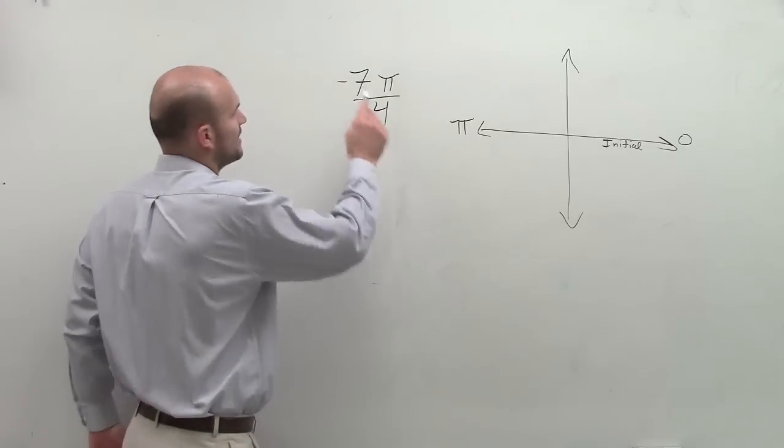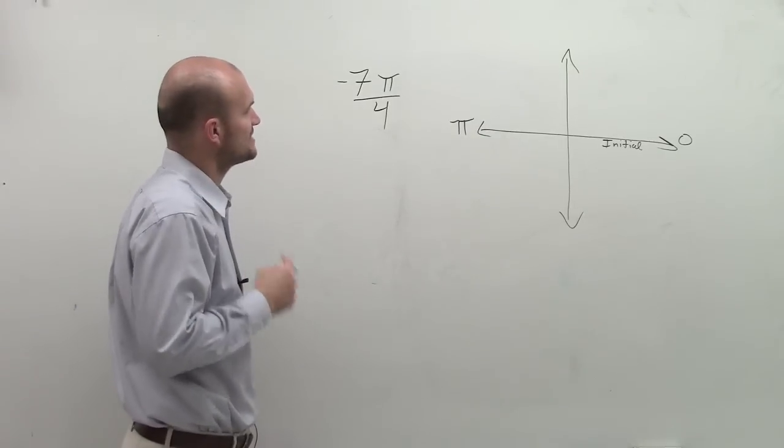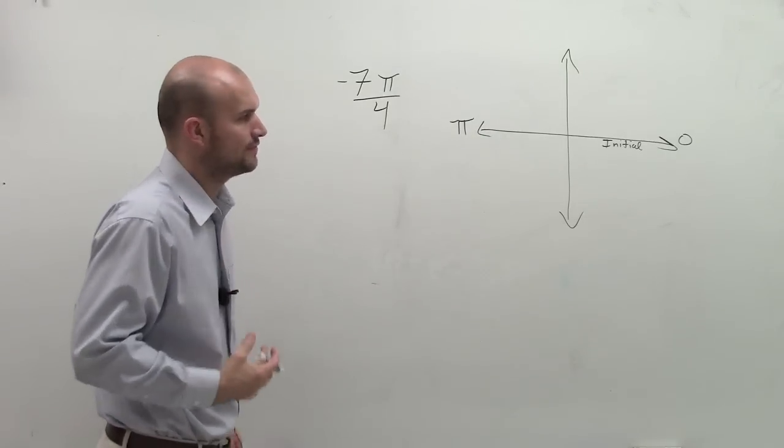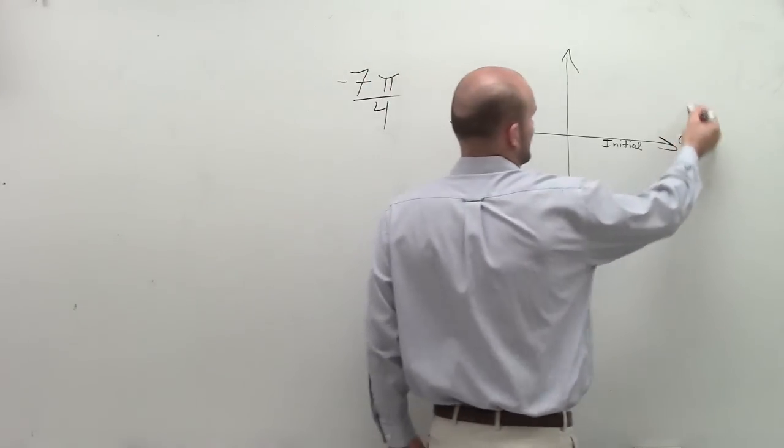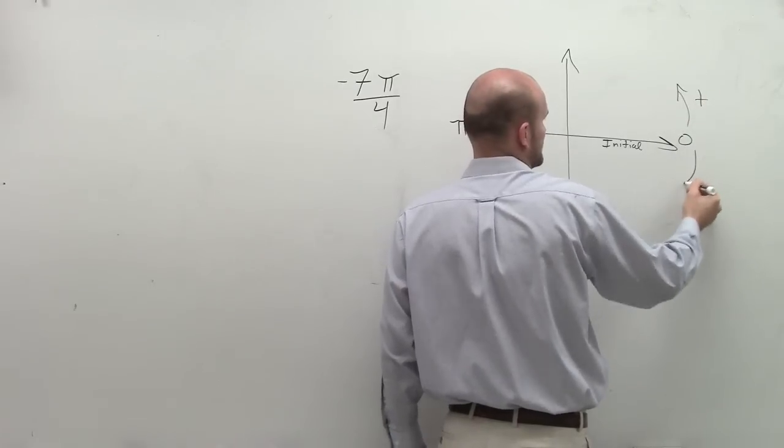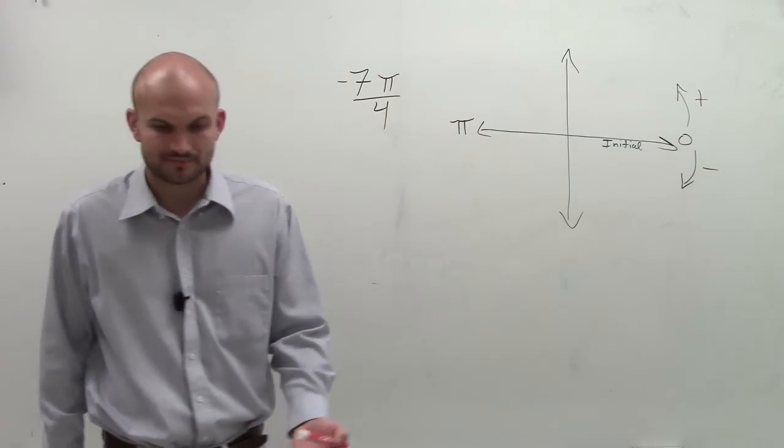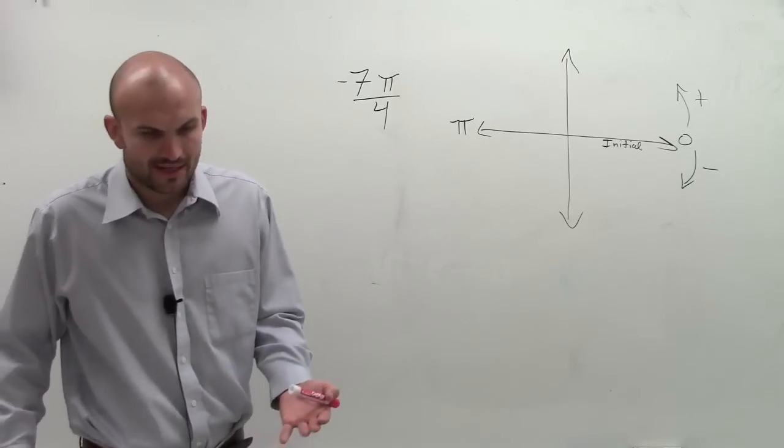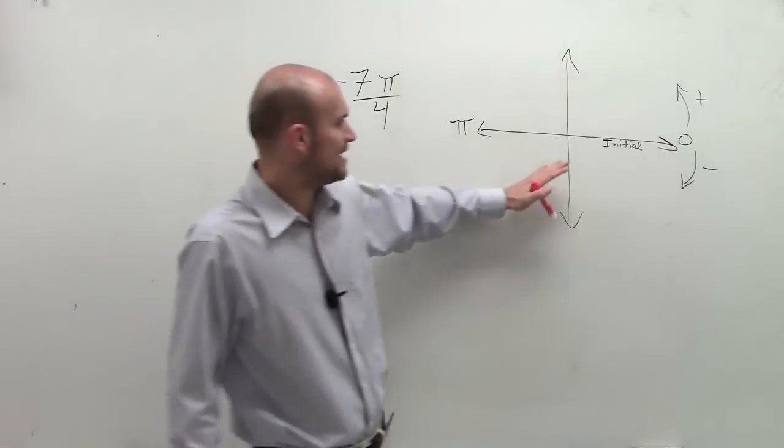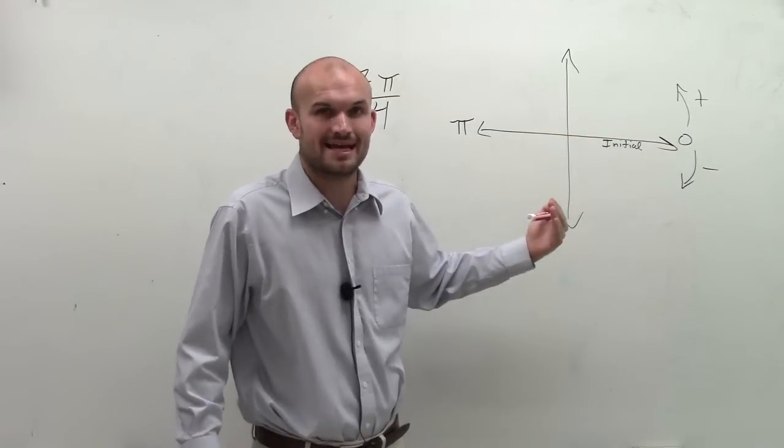So now what I'm saying is I want you to measure negative 7π over 4. The first thing we need to know is this is your positive direction. Here is my negative direction. So I'm still going to count it out in positive values, but we just got to remember the direction is negative.